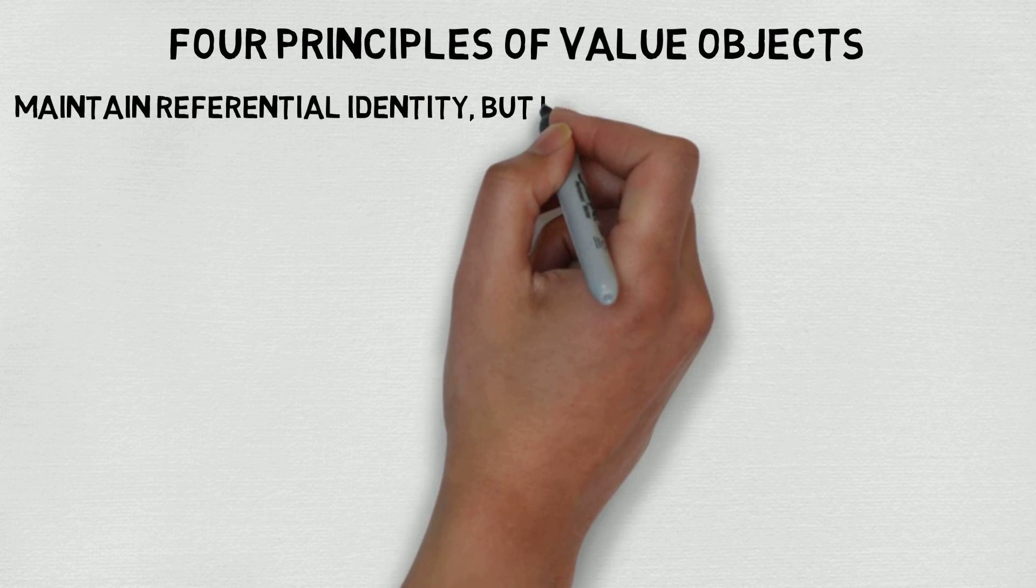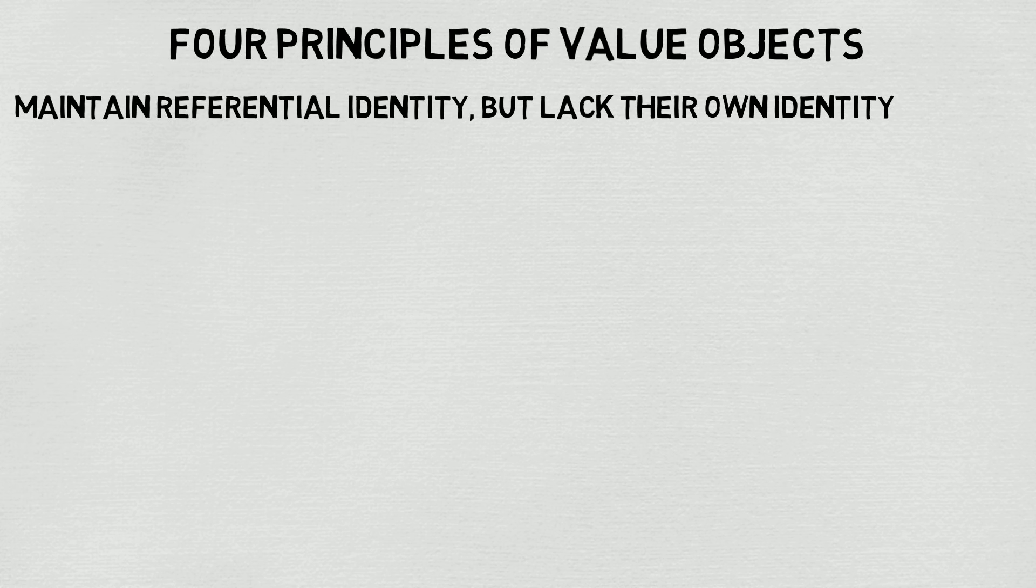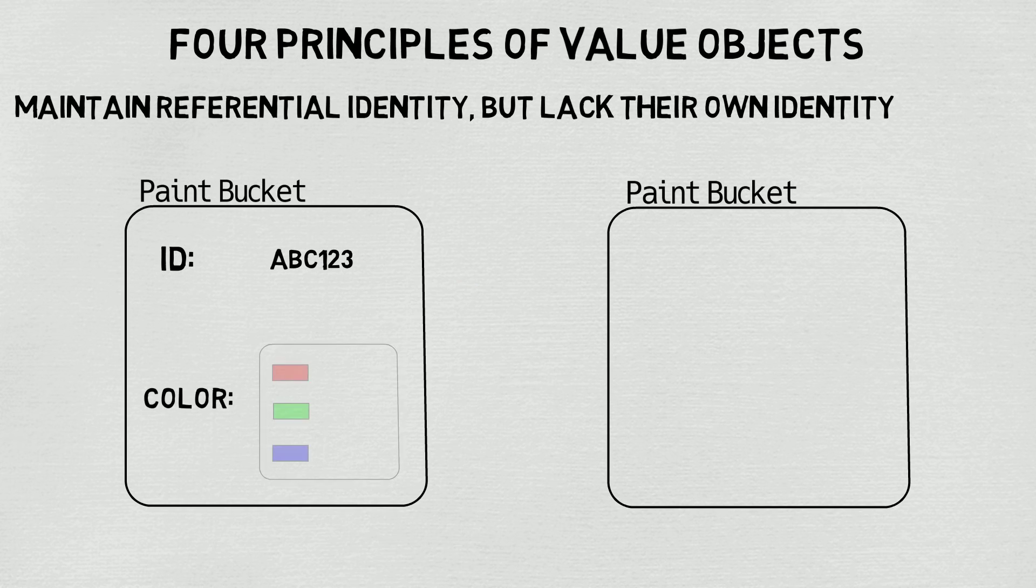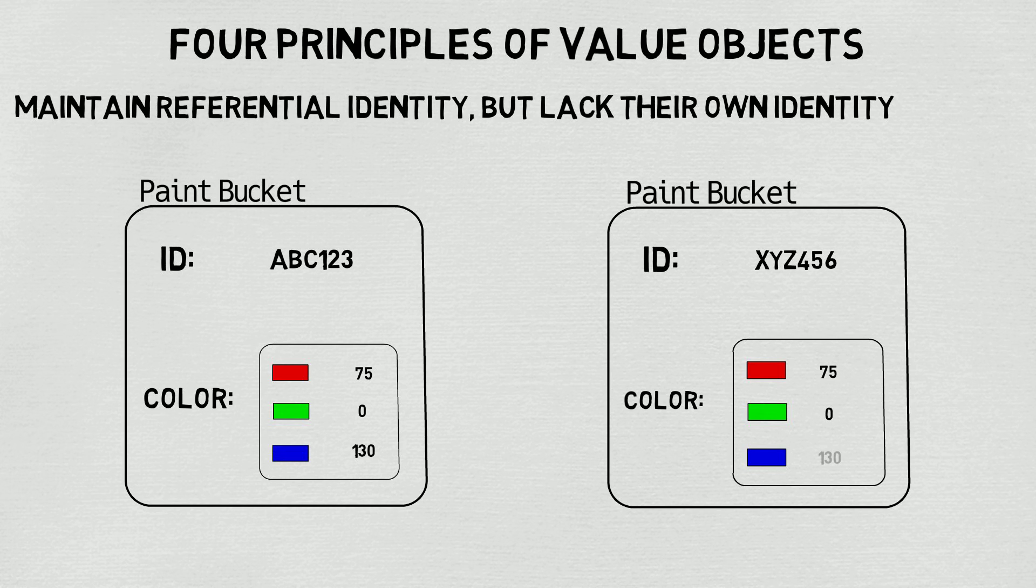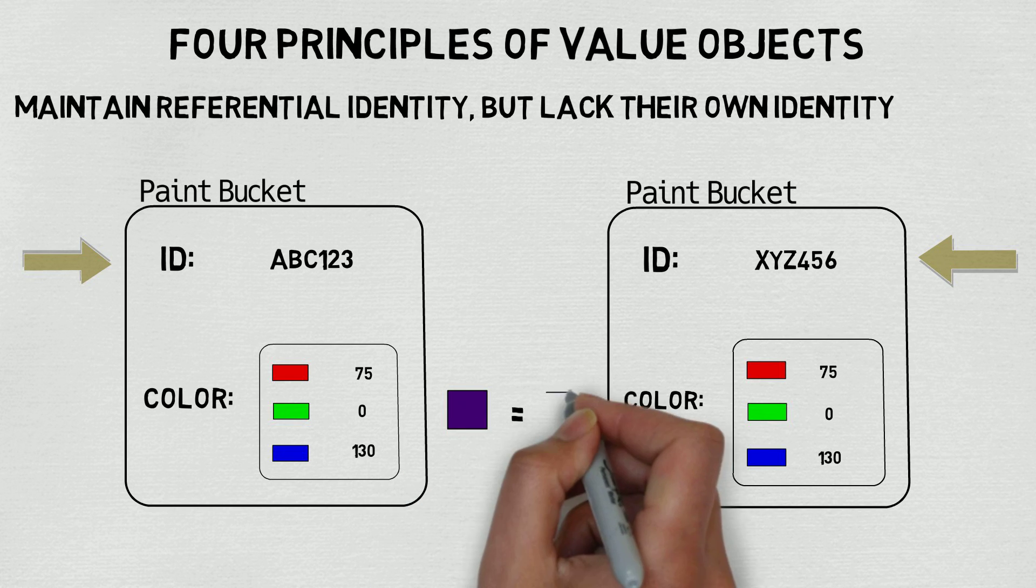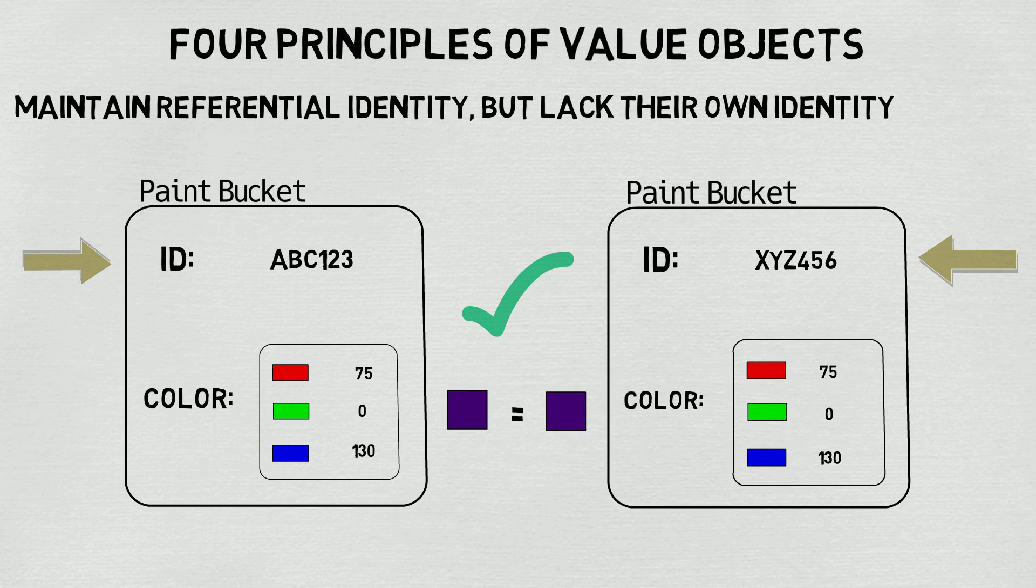The third principle is they maintain referential identity but lack their own identity. Think back to how we were able to determine that two cars were painted the same color even though they came from two different paint buckets. The identity of the two paint buckets were different, but by looking at their color value objects and determining that their referential identity was the same, it allowed us to say that both cars were painted the same color even though they were painted from two different paint buckets.